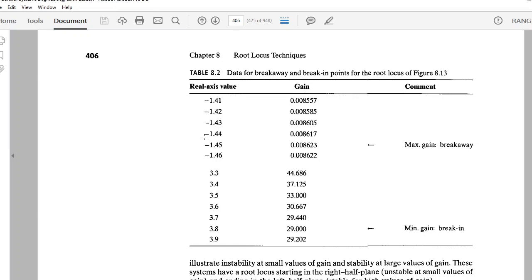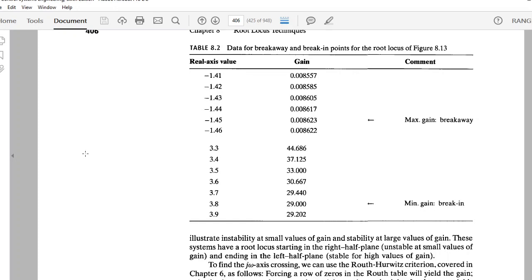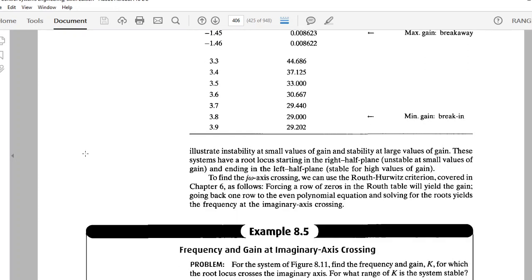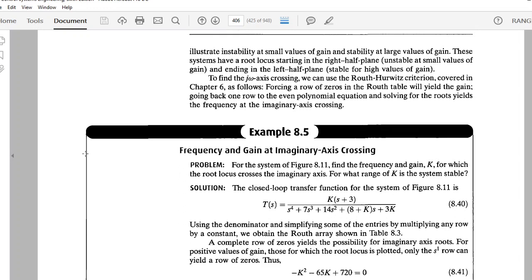The minute it goes from the j-omega axis to the right-hand plane, the system becomes unstable. So, this is the point where it's gained its maximum stability. That is why the j-omega axis crossing is very important. Rightfully, we are going to use the Routh-Hurwitz Criterion to calculate the j-omega axis crossing.